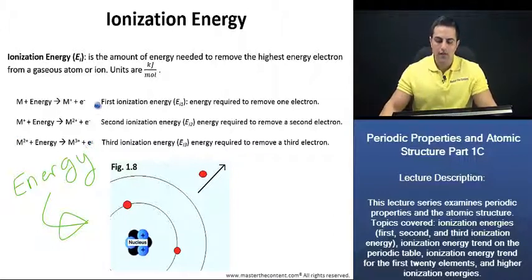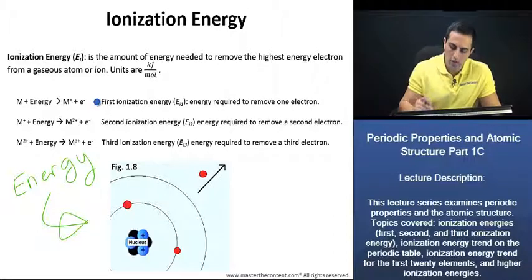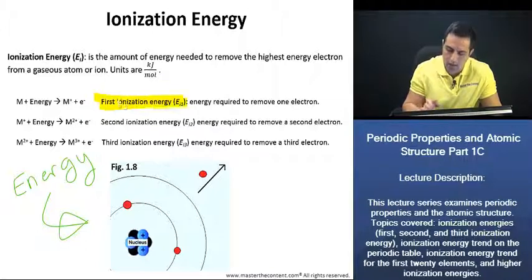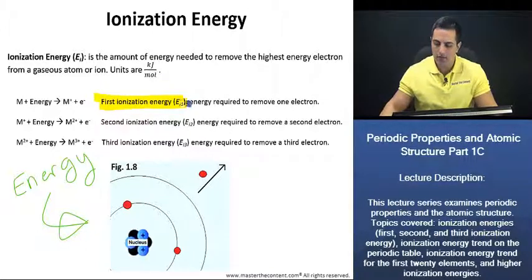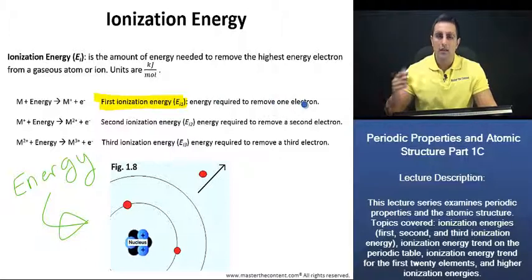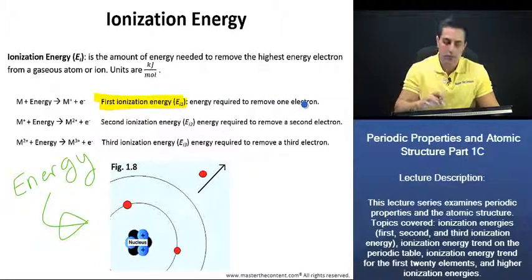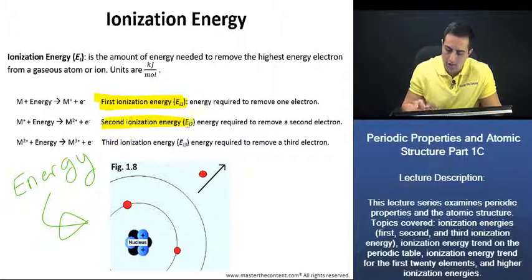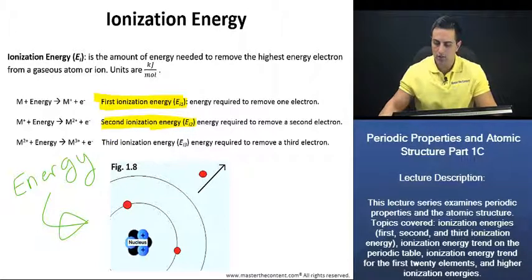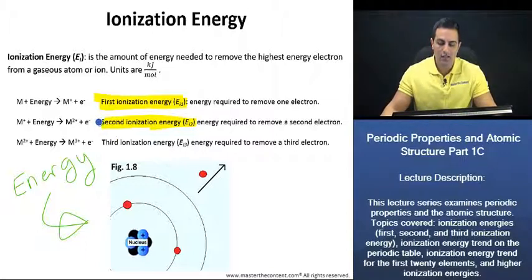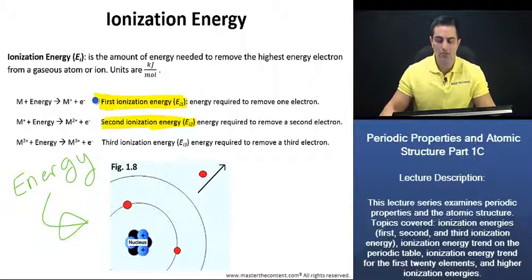The amount of energy required to remove that first electron is known as the first ionization energy — the energy required to remove one electron. The amount of energy required to remove the second electron is known as the second ionization energy, and so on for the third ionization energy. Furthermore, the second ionization energy is always going to be higher than the first ionization energy, because it's harder to remove that second electron, and we'll discuss why in just a few slides.